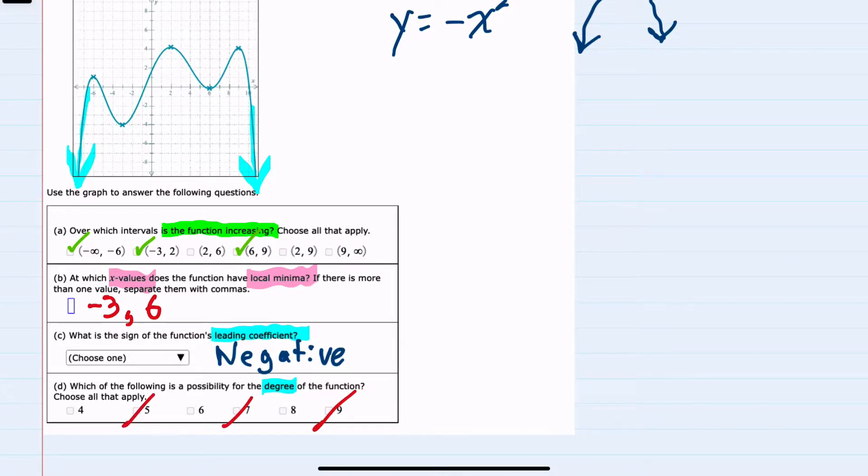And then we can look at the number of times that our graph changes direction. So it changes direction once here, again going from down to up, from up to down. It changes direction here down to up here and then lastly up to back down again.